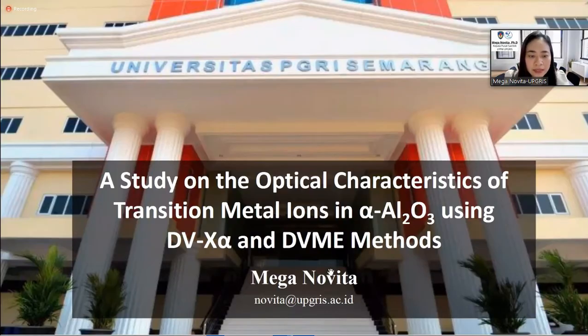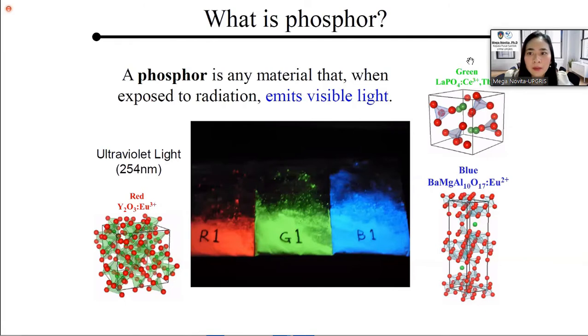Okay, this opportunity, I'd like to talk about a study on the optical characteristic of transition metal ions in alpha alumina crystal using the DVX alpha and DVMA method. Then I'd like to give you all an illustration. In our daily life, we are often to talk about phosphor. It's not the one in the spinach, but it's actually any material that when exposed to a radiation, emits visible light.